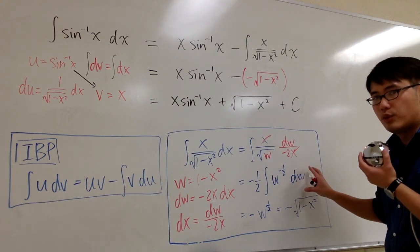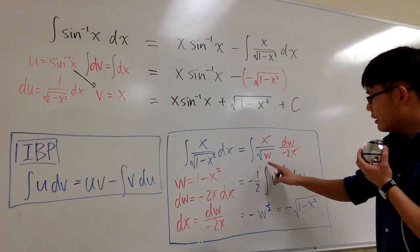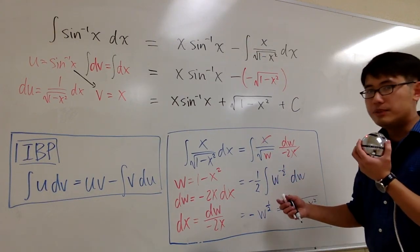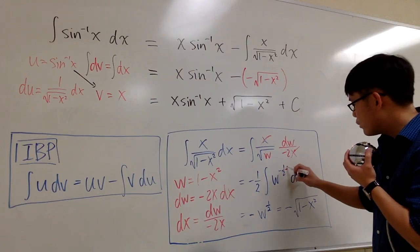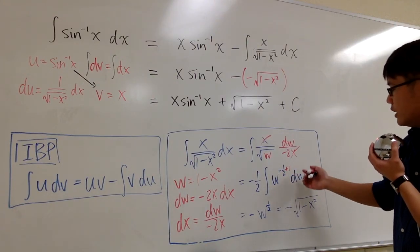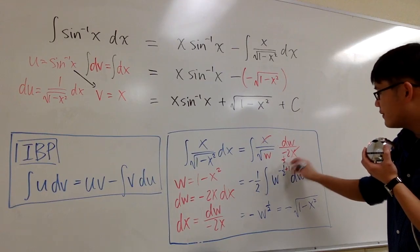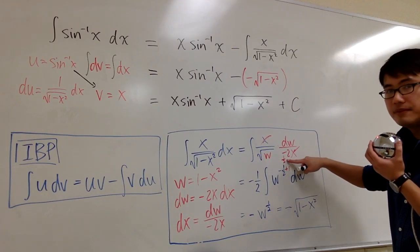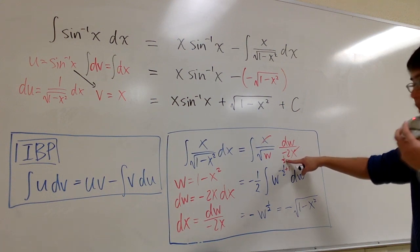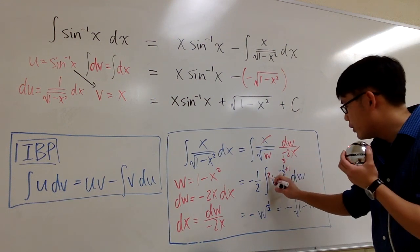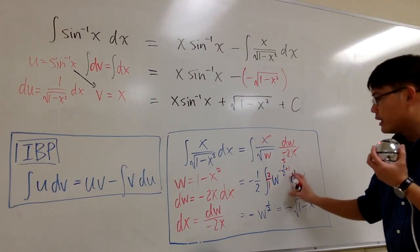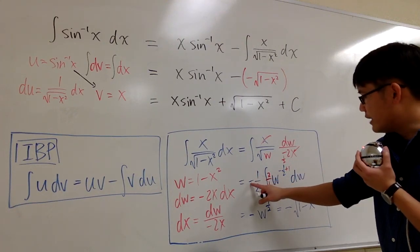But then 1 over square root of w is the same as w to the negative 1 half power. So this power right here is the one that we have to integrate. Integral of w to the negative 1 half power. We can do the reverse power rule. Namely, let me add 1 to this. So negative 1 half plus 1. That will give us positive 1 half. And then I have to divide by the new exponent. Divided by 1 half is the same as multiplied by 2 over 1. So that's the reverse power rule.